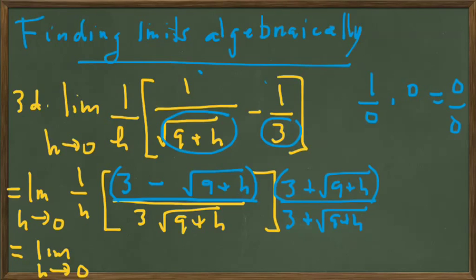So we've multiplied the numerator and denominator by the conjugate of the numerator, multiplying it by 1. Notice that when we multiply the two factors in the numerator together, we get 9 minus 9 plus h in parentheses.